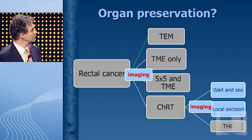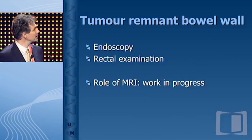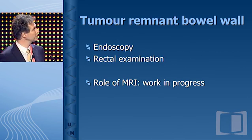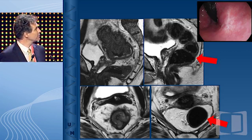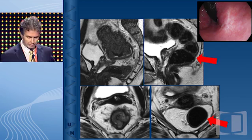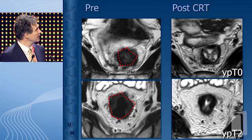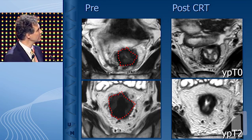It gets even more complicated when thinking of organ sparing with watch-and-wait or local excision — you raise the bar for the radiologist. Endoscopy and rectal examination are probably the more important tools, and the role of MRI is additional to that — still a work in progress. Sometimes it helps when you see a nice response: a completely normalized wall with a completely clear mesorectum. But again, fibrosis is very difficult to interpret — the images look similar, but the top one is a ypT0 — complete response — and this one is not.